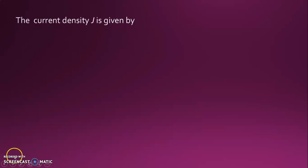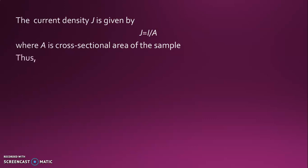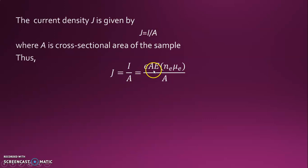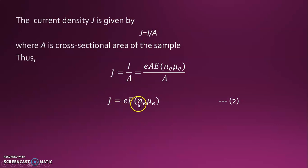Now, the current density J is defined as current flow per cross-section area A. So J = I / A. Substituting the expression for I from equation 1 — which is e × A × E × (N_xE × μ_xE) — and dividing by cross-section area A, the A cancels. Current density J becomes: J = e × E × (N_xE × μ_xE). Let this be equation number 2.